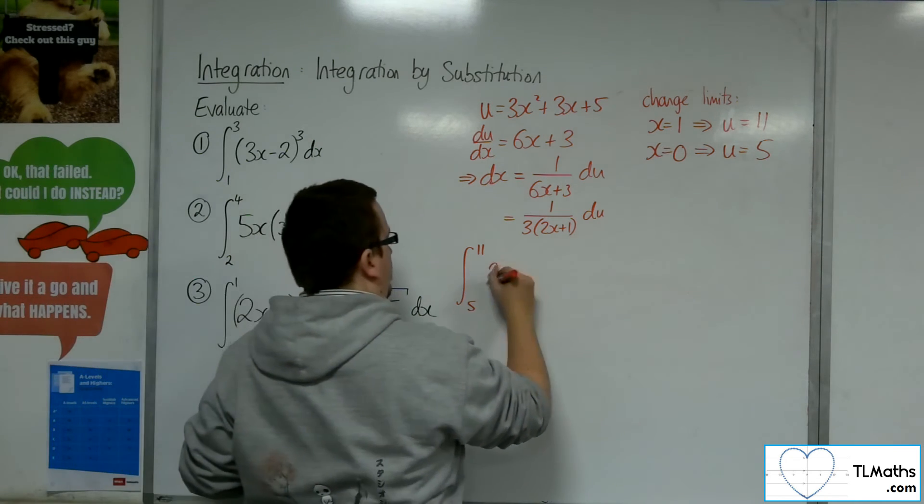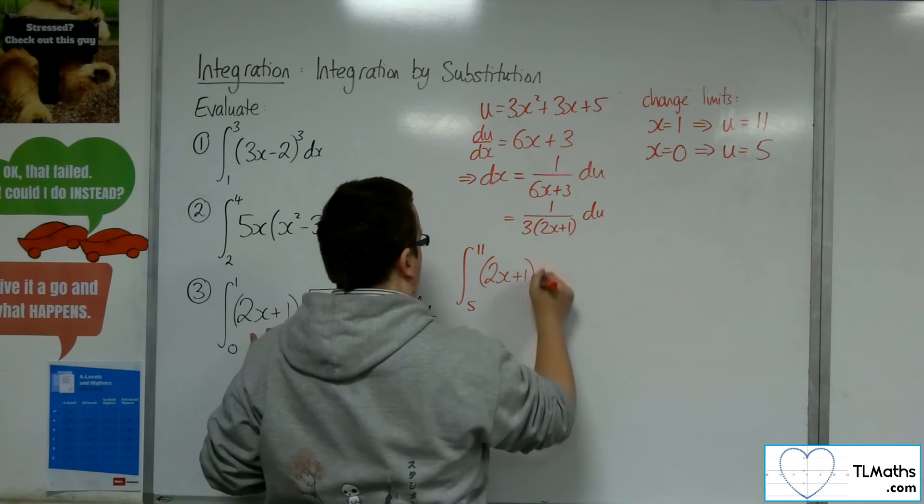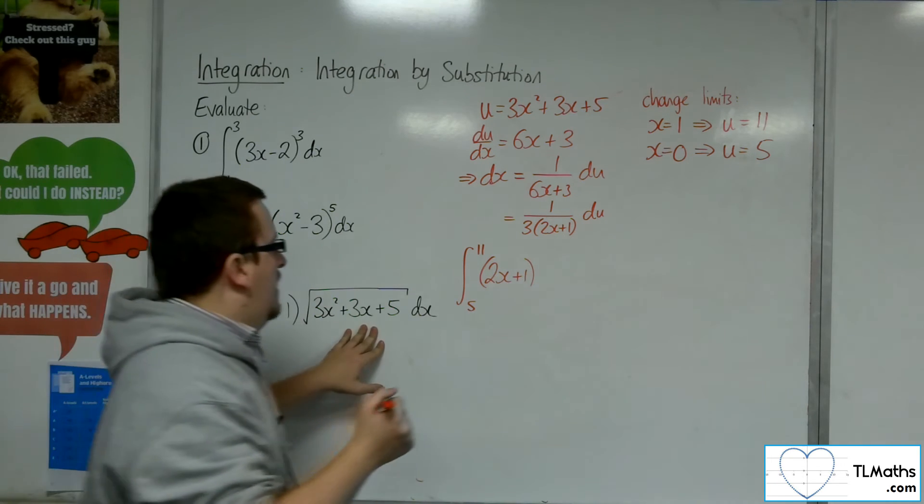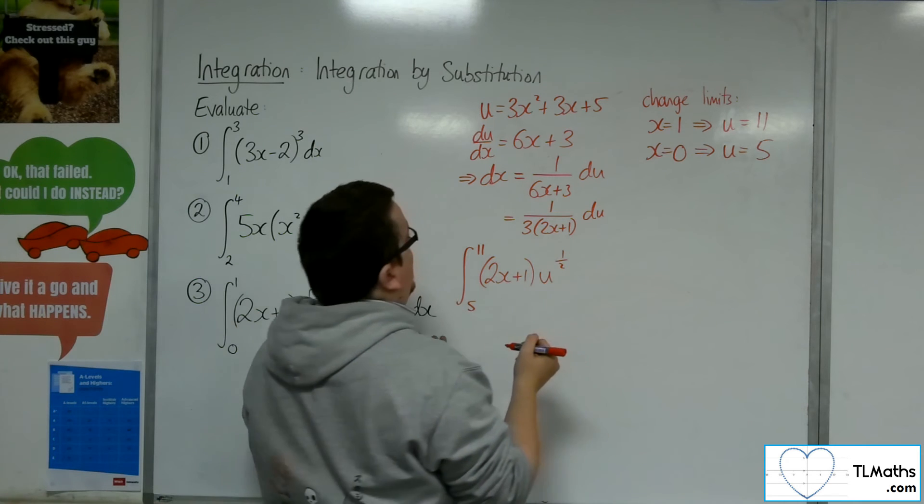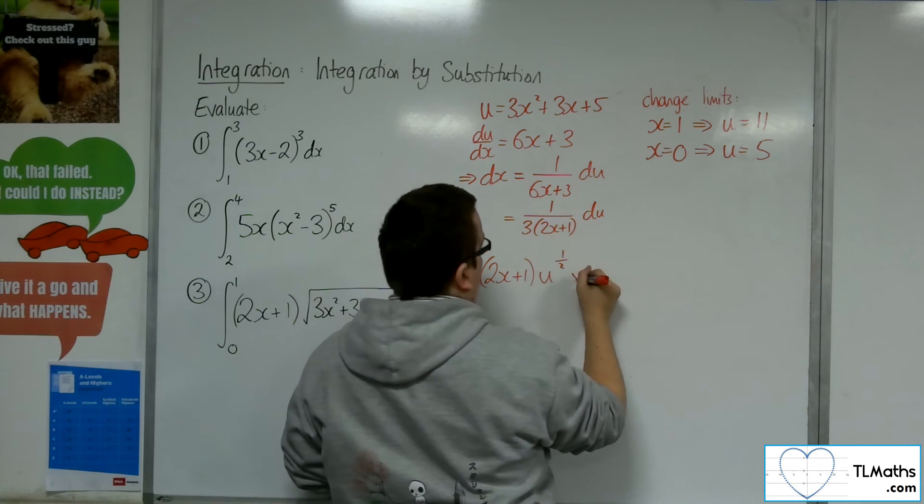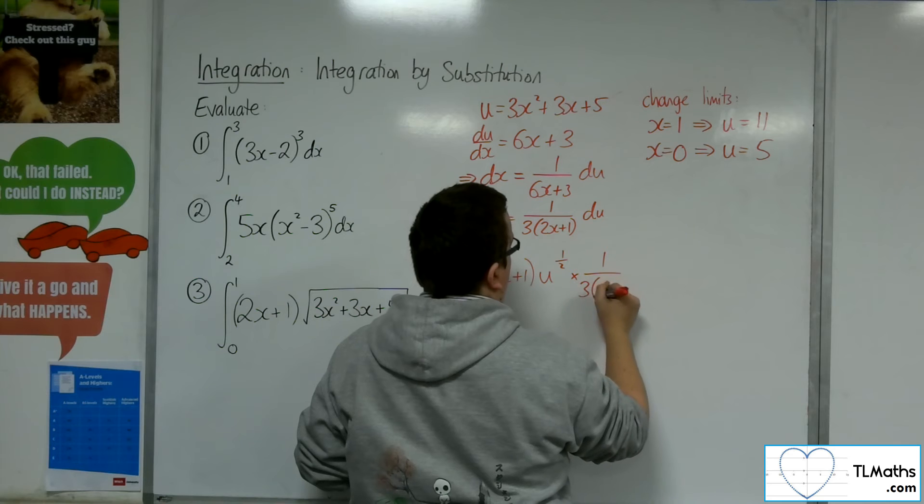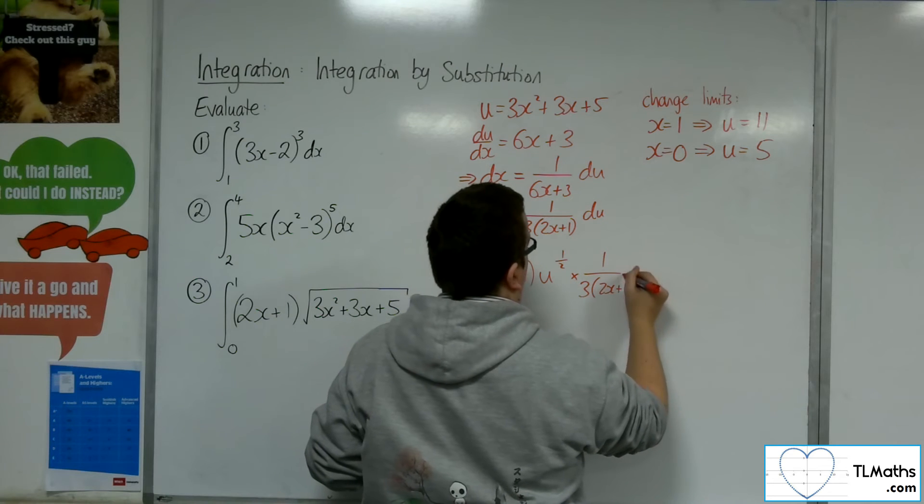The 2x plus 1 times u to the half, and the dx has been replaced with this. So 1 over 3, 2x plus 1 du.